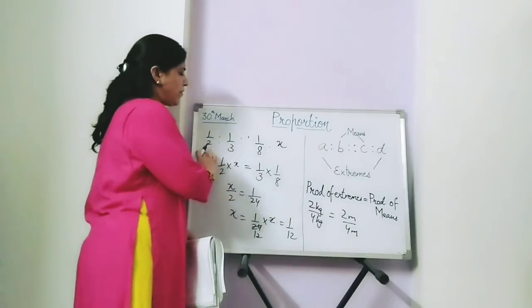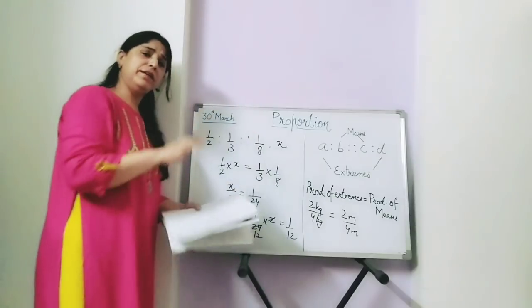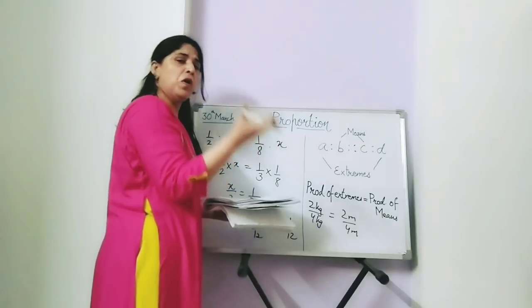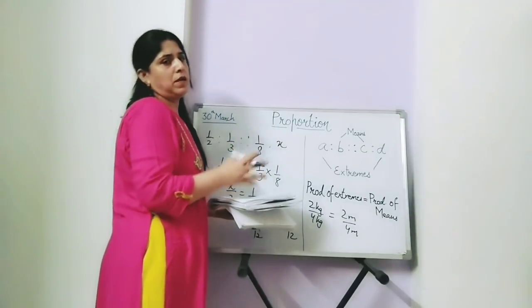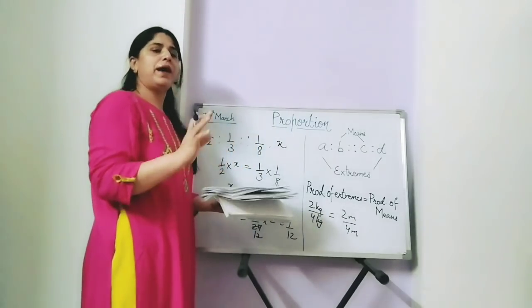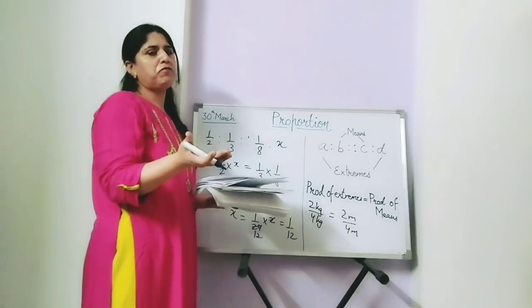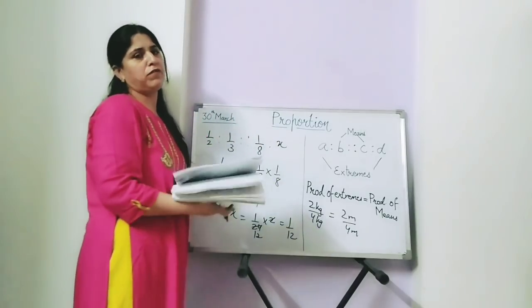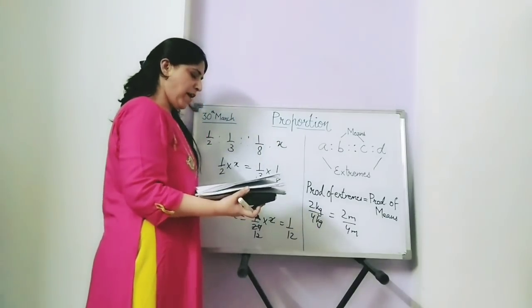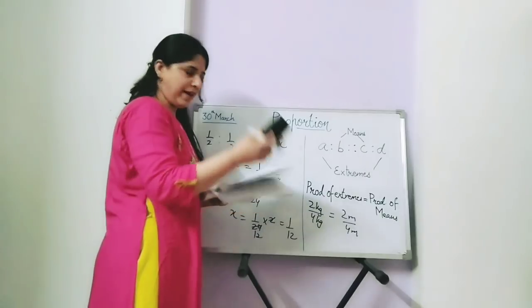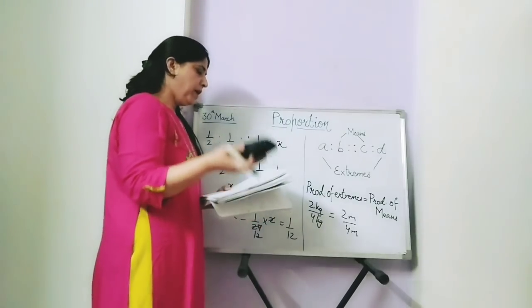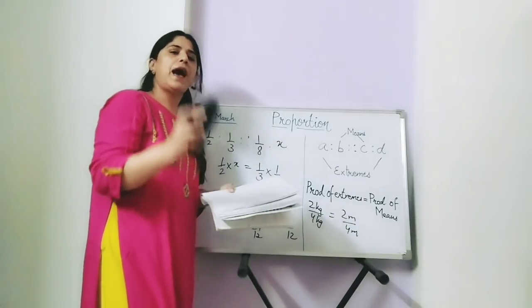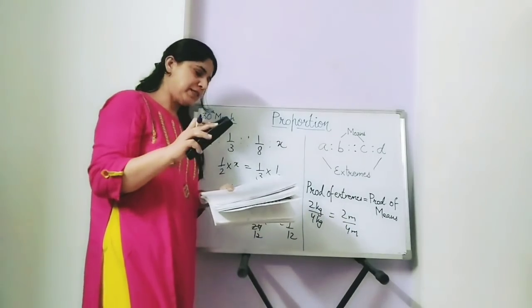So you can find the value of x whether the ratios are in fraction form or whole numbers. Proportion is checked by: product of extremes is equal to product of means. You can find any unknown — if the numbers are in proportion, you can find the unknown number. Now do questions 1, 2, 3 and 4 of your exercise.